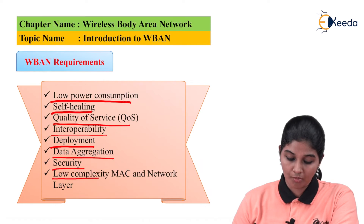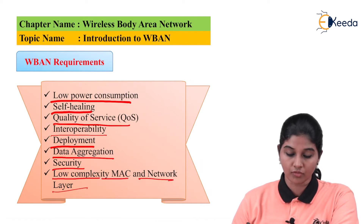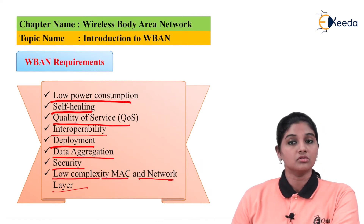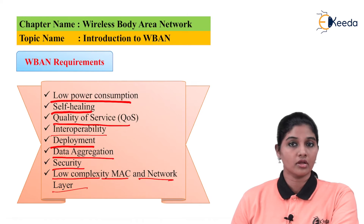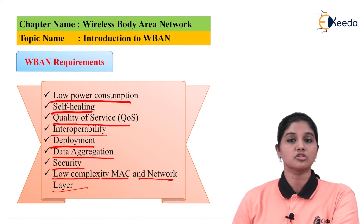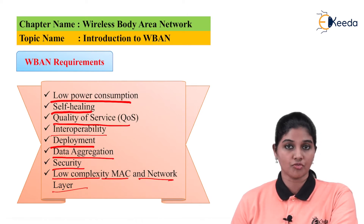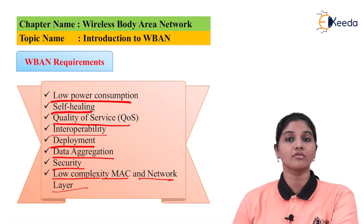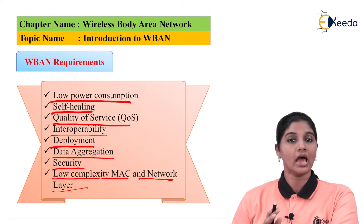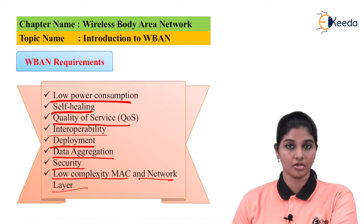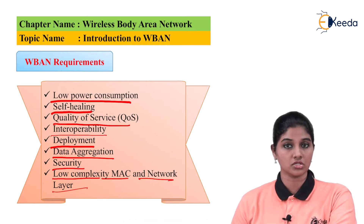Next is low complexity MAC and network layer. In case of wireless body area network, the architecture is the same as the OSI reference model. Therefore it is very important to have a less complex MAC layer and less complex network layer in order to perform data transfer across the network.